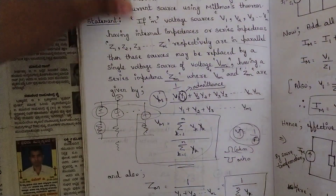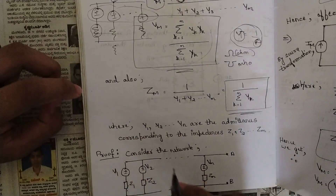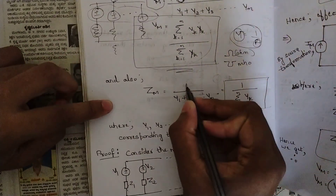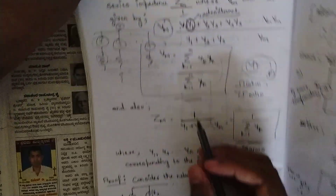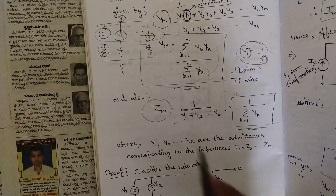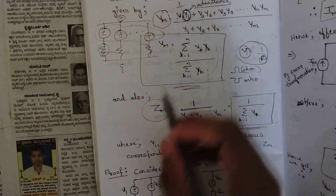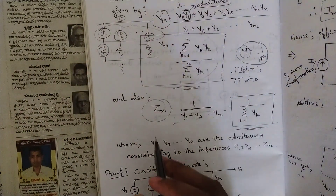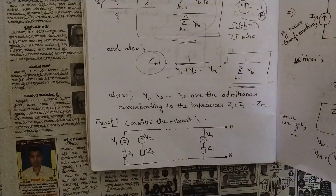Similarly for Zm, the equivalent impedance, there is a separate formula: Zm = 1 / (Y1 + Y2 + ... + Yn). However many resistances are mentioned, take 1 divided by each resistance as the admittance, sum them all up, and take the reciprocal to get Zm. Then write Vm and Zm in series to finish the Millman's theorem problem. This is very easy. They have also mentioned the proof part here.